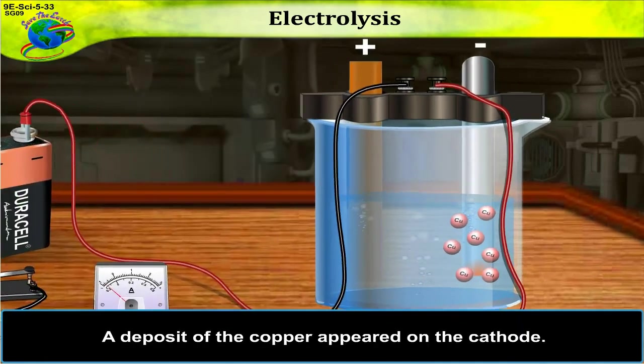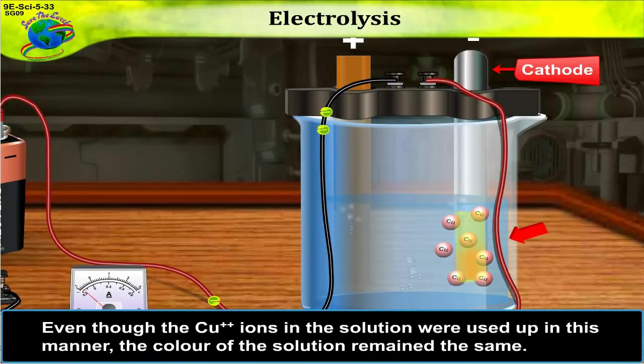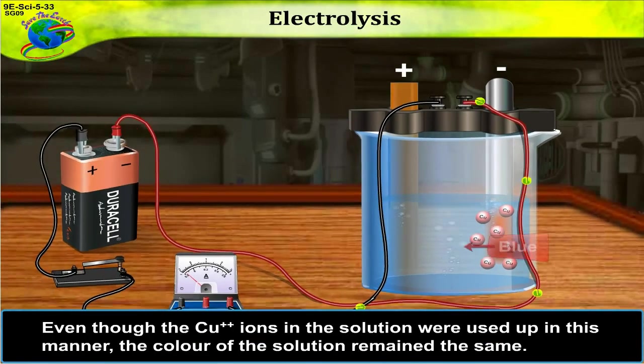A deposit of the copper appeared on the cathode. Even though the Cu2 plus ions in the solution were used up in this manner, the colour of the solution remained the same.